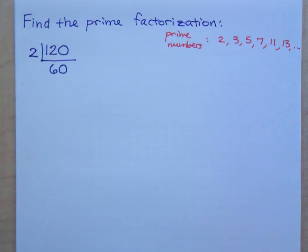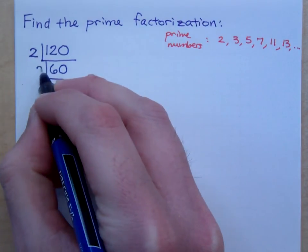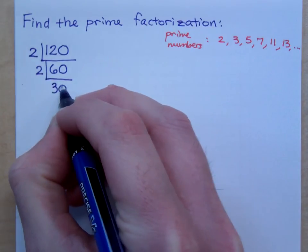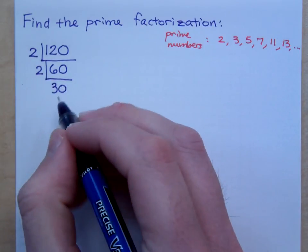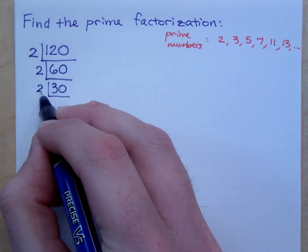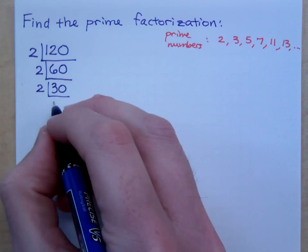Now, you keep using that prime factor until you can't use it anymore. Does 2 go into 60? So how many times does 2 go into 60? It goes in 30 times, right? Does 2 go into 30? Of course, 2 goes into 30 because it's an even number, right? And it goes in 15 times.